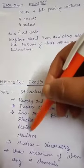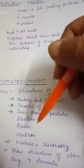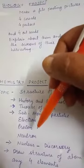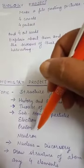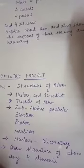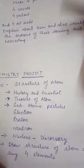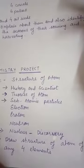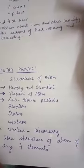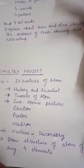Then subatomic particles — if you break an atom it gives you electron, proton, and neutron. You are going to write about their discovery, charge, and mass. Then write about the nucleus — the discovery of the nucleus, who discovered it and how it was discovered. Then you have to draw the structure of the atom for any four elements.